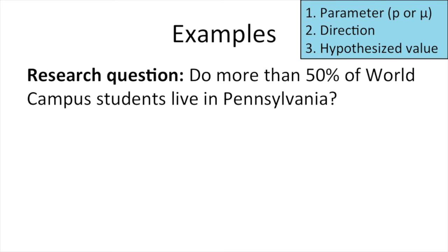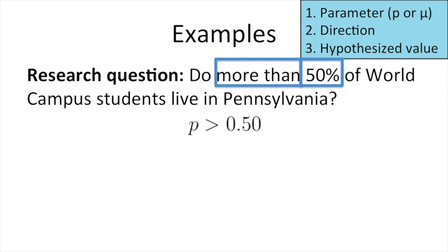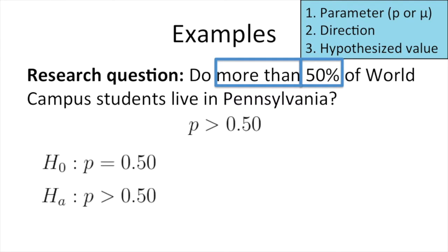Here's another example: do more than 50% of world campus students live in Pennsylvania? Our parameter is P because we're looking at a percentage converted to a proportion. This is again a right-tail test because we want to know if the population proportion is greater than a given value. The hypothesized value is 0.50. The null hypothesis is P equals 0.50, and the alternative hypothesis is P is greater than 0.50. This is another right-tailed test.